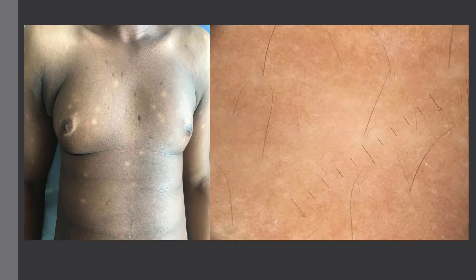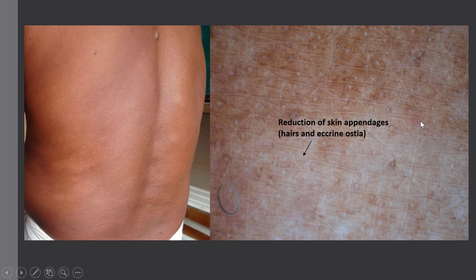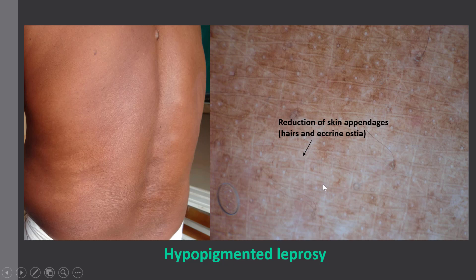Coming back to our two cases: in the first case, we have ill-defined dull white areas with no other dermoscopic clue, so the diagnosis is pityriasis alba. In the second case, we still have ill-defined white areas, but most importantly we have a reduction of skin appendages — anacrostia — so the diagnosis is hypopigmented leprosy.